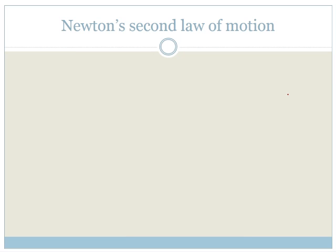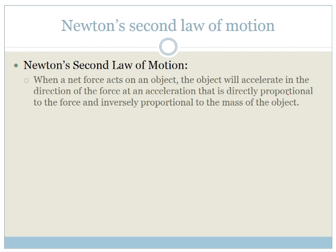Let's talk about Newton's second law of motion. We know Newton's second law of motion. It states that the net force acts on an object. The object will accelerate in the direction of the force at acceleration that is directly proportional to the force and inversely proportional to the mass. Let's read that again and put it in the equation form.